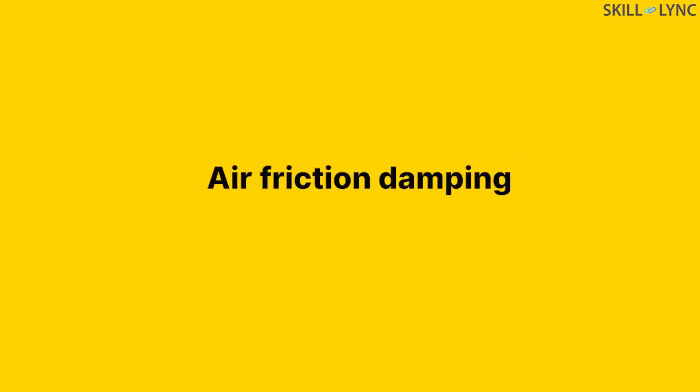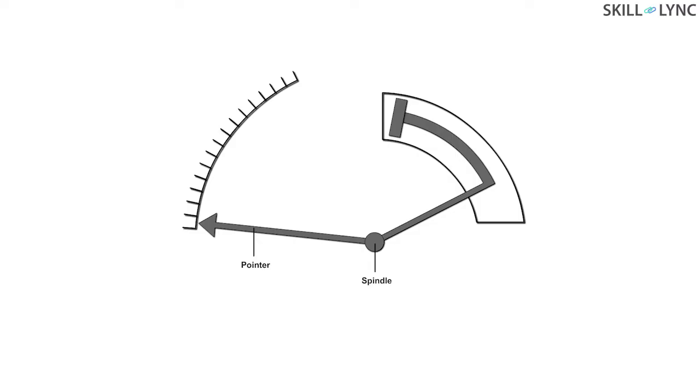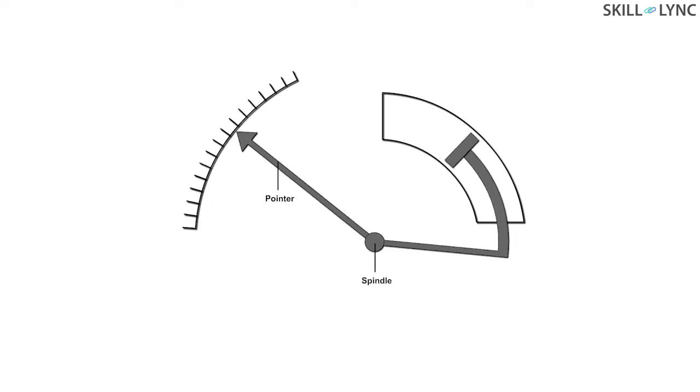Firstly, we have air friction damping. In air friction damping, the spindle is attached to a piston. The piston is usually made of aluminium and placed inside an air chamber. When the needle moves towards the right, the piston is pushed inside, since this decreases the volume inside the chamber.